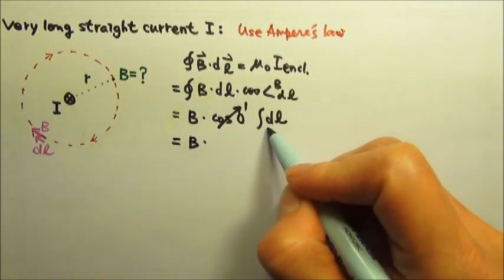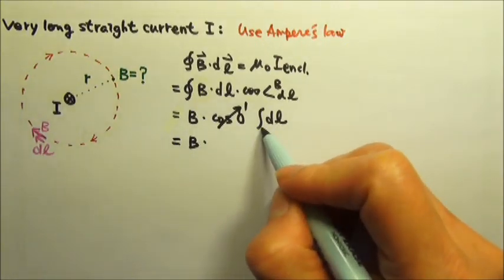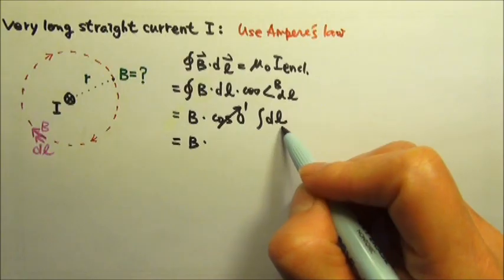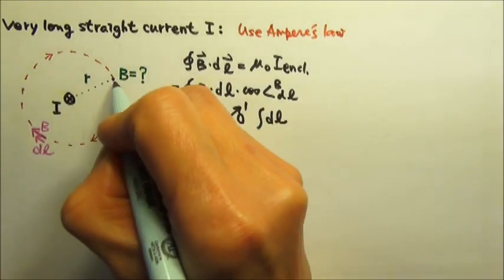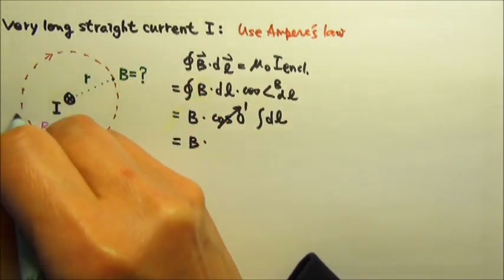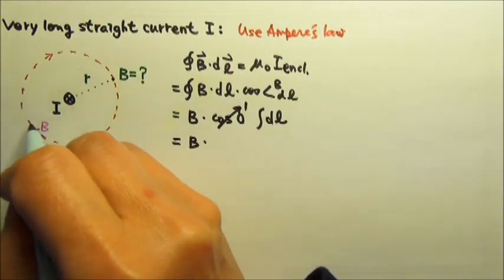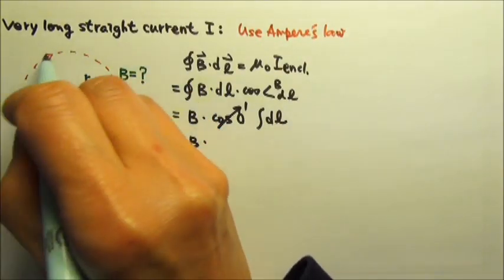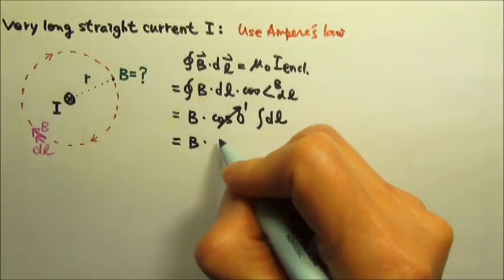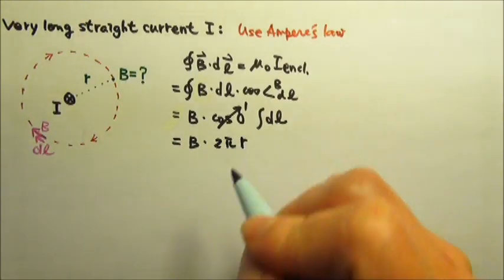This dl is the Ampere's loop, and we are integrating the dl, the scalar, which gives us l, the length of the Ampere's loop, the circumference of this circle, which is 2πr.